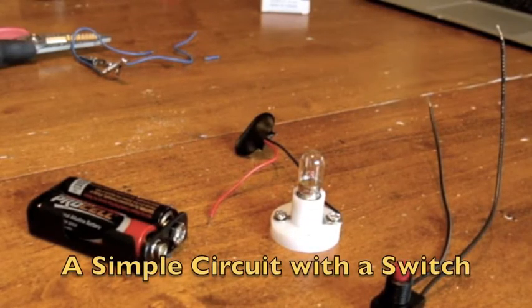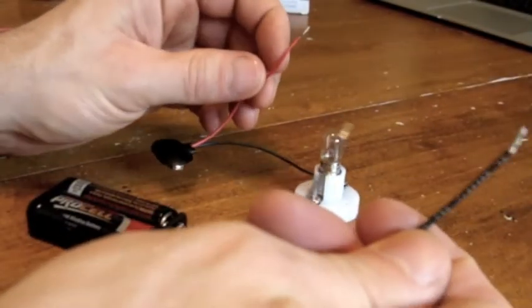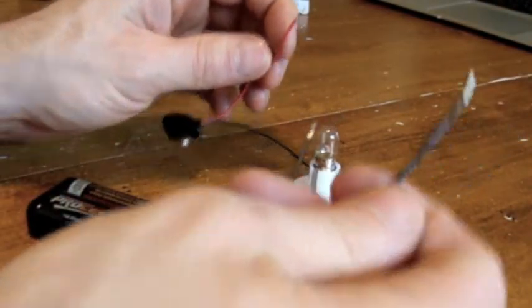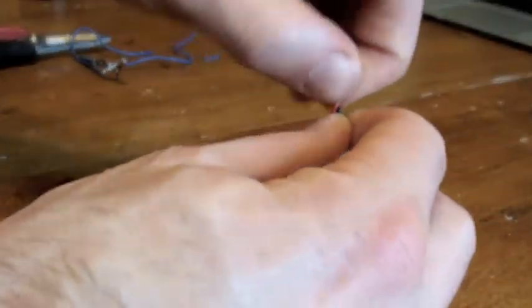Let's try a more complicated example of a simple circuit. Let's have our simple circuit include the battery pack, the wires, the bulb, and a switch. So I'm going to undo my simple circuit and insert a switch.